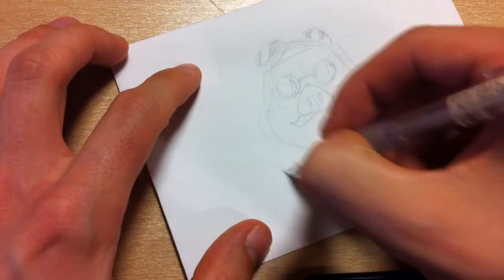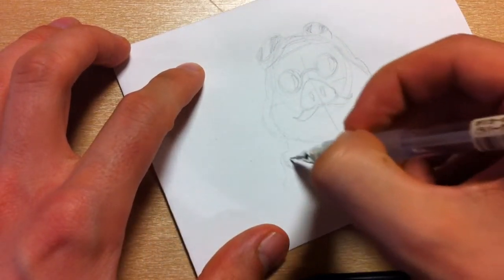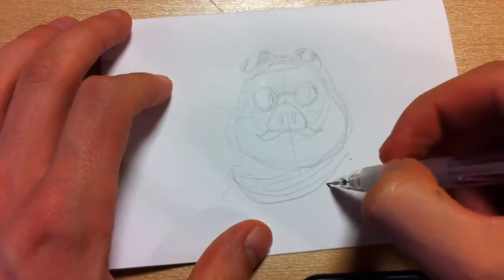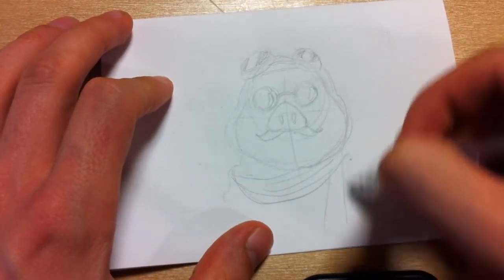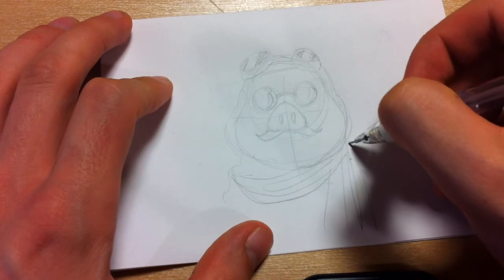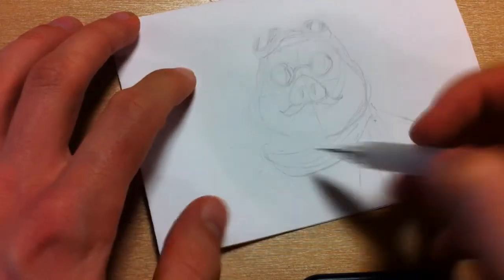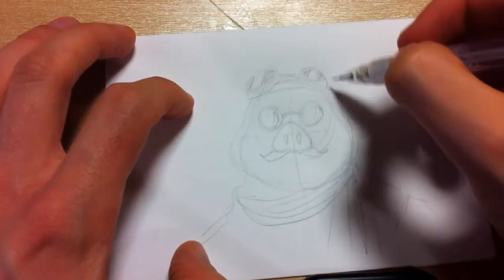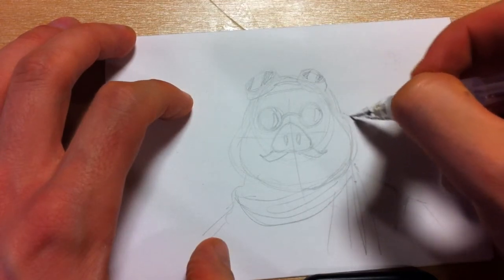Also, he's got a big swooping scarf over here. Alright. He's got a long white scarf that swoops down like that. And that's his helmet.